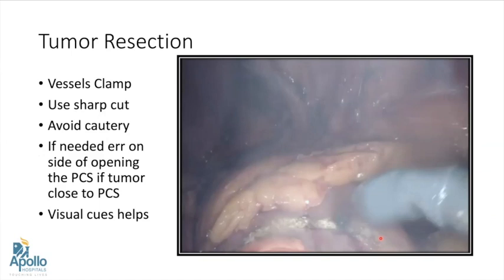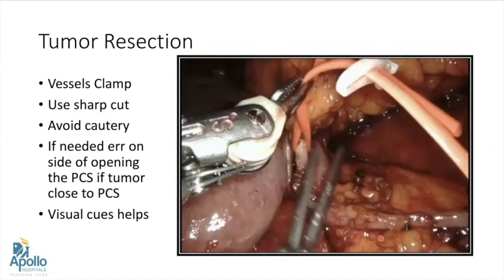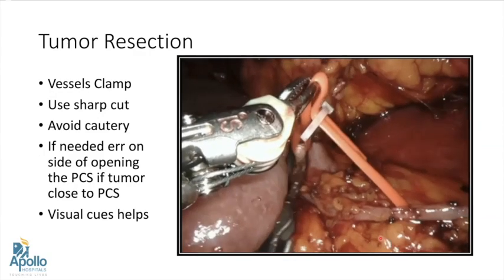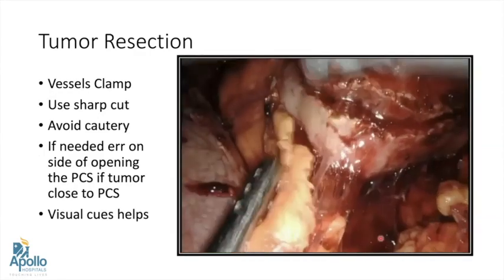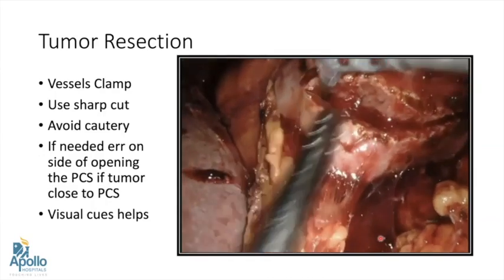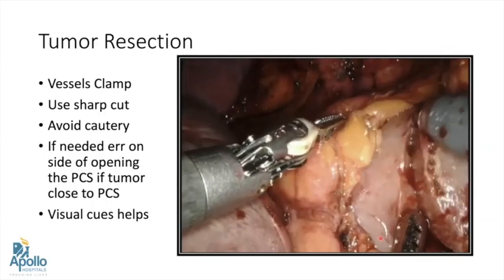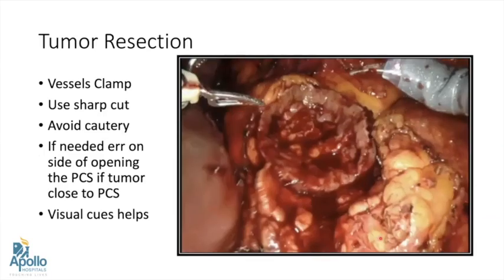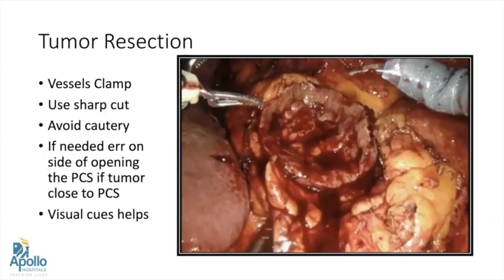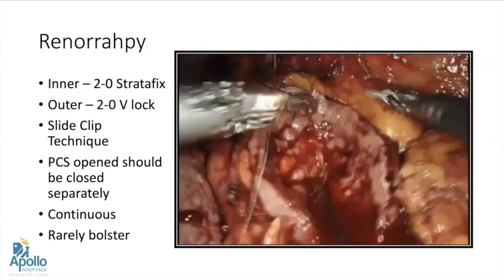Once tumor demarcation is done, the next step is tumor resection. The kidney should be mobilized completely depending on the position of the tumor. Vessels are clamped depending on the complexity of the surgery — either artery alone or both. Sharp cutting should be used and the tumor resected all around. We should avoid using cautery; if the PCS is close to the tumor, we should be open to entering it. Visual cues are very helpful during partial nephrectomy.